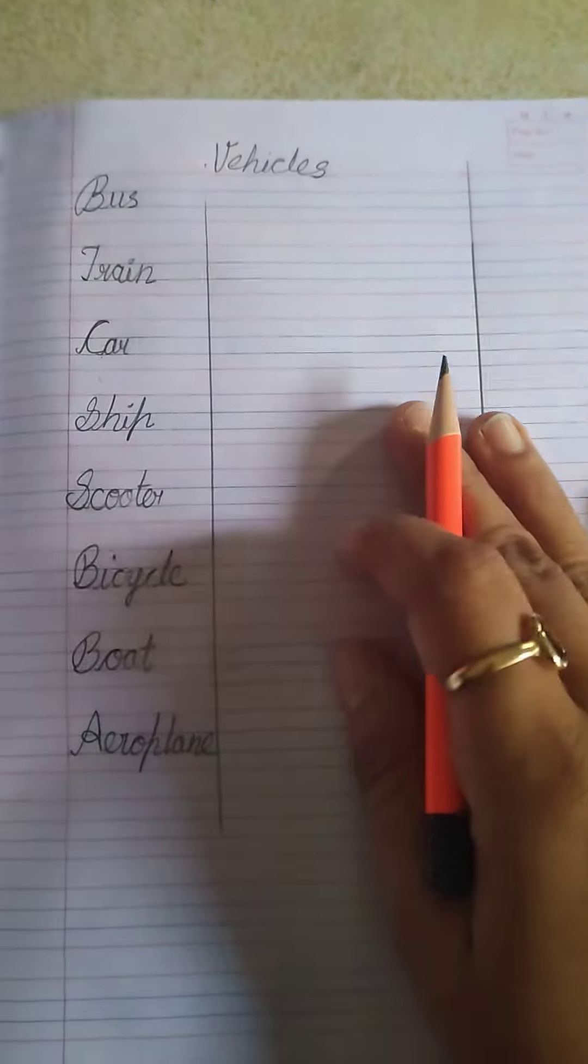Good morning dear students. Jai Swaminarayan. Now today we are going to write down vehicle spellings. So first give title: Vehicles.